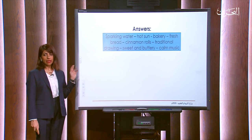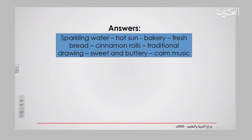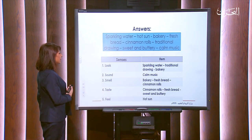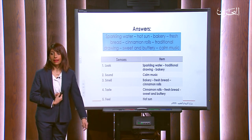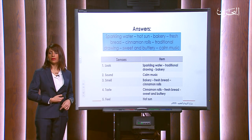Let me read the items before I give you the answers: sparkling water, hot sun, bakery, fresh bread, cinnamon rolls, traditional drawing, sweet and buttery, calm music. Let's check the answers. Number one, the look sense: the items we can see are sparkling water, traditional drawing, and bakery. Anything that you can see is classified as the look sense. Number two, sound: calm music is classified in the sound sense.